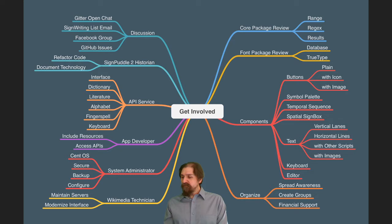For getting involved, there is also the API services that we will be developing. Those are going to deal with interfaces and dictionaries, literatures, alphabets for simple subsets, fingerspelling for automatic creation of the fingerspelling with SignWriting, and also keyboard input. Those API services are, there's older services that we already have, but we're going to be recreating those and redoing those. Probably using a PHP package called Symfony, so that is an exciting possibility.